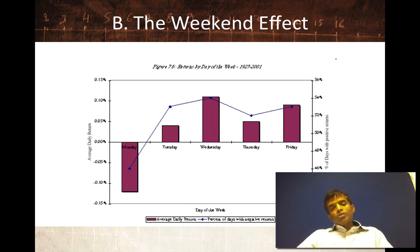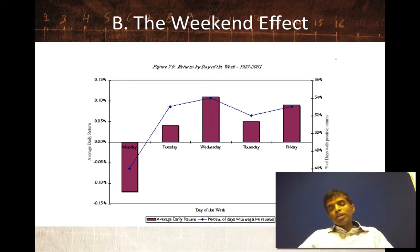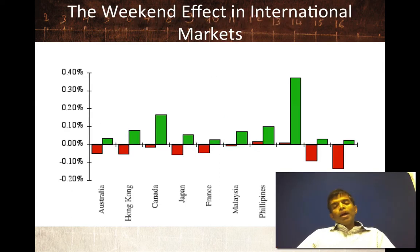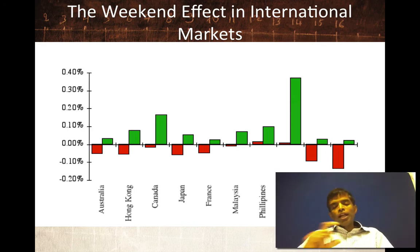The second effect I want to talk about is the weekend effect. If you take the last 50, 60, 70 years — in this case 1927 through 2001 — and compute returns by day of the week, Mondays are by far the worst day of the week to invest in, and also the day where you're most likely to see more stocks go down than go up. That's called the weekend effect. It's again fairly universal — look across markets including Hong Kong, Canada, Japan, and France — in pretty much every market, Mondays are worse days to invest in than any other day of the week.